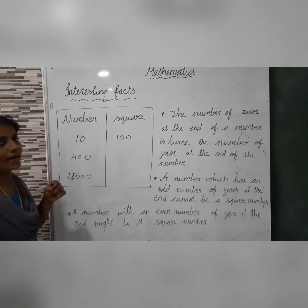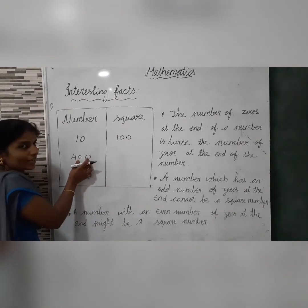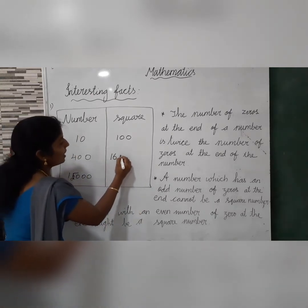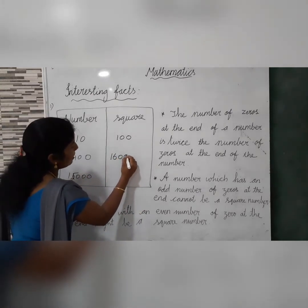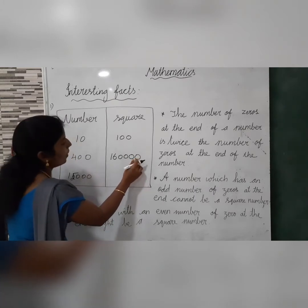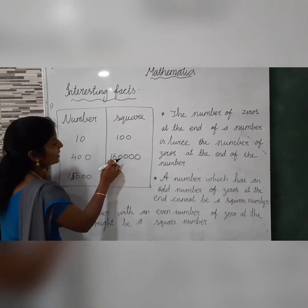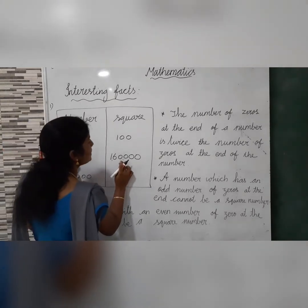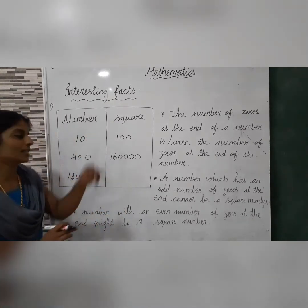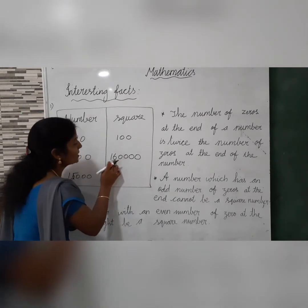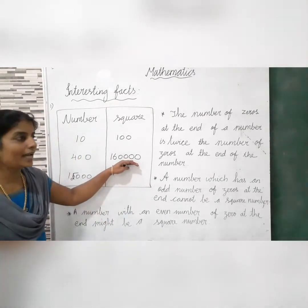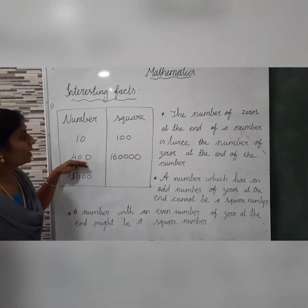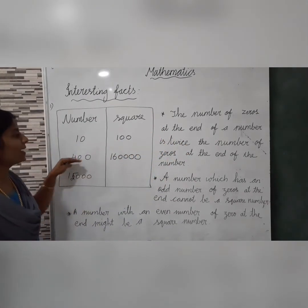Another example: 400 has two zeros at the end. Its square, 400² = 160,000, which has four zeros — twice the two zeros. So the pattern holds: if a number ends in 2 zeros, its square ends in 4 zeros.